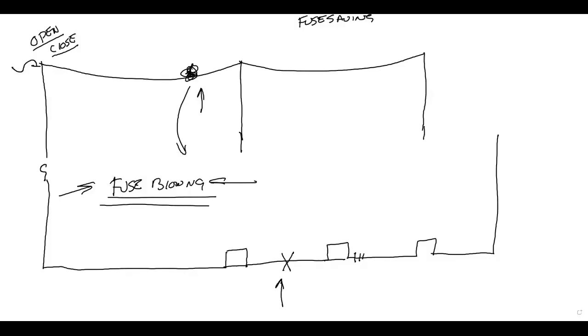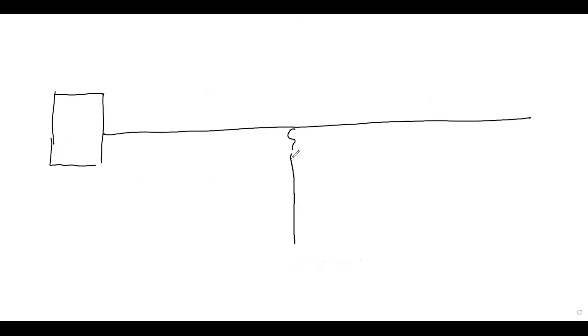Now a safety scenario on the whiteboard: I've got a breaker, a feeder line, a tap line, and a bucket truck working on the circuit. For safety purposes, before starting work on this circuit, what do I need to obtain?